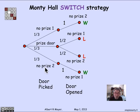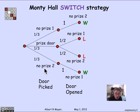We're going to get some mileage out of the more complicated tree in a later video segment, when we start talking about conditional probabilities — what are the probabilities of things happening at various stages in the experiment. But if we'd really been thinking solely about how to analyze the probability of winning with the switch strategy, this would have been a much better tree to start with.